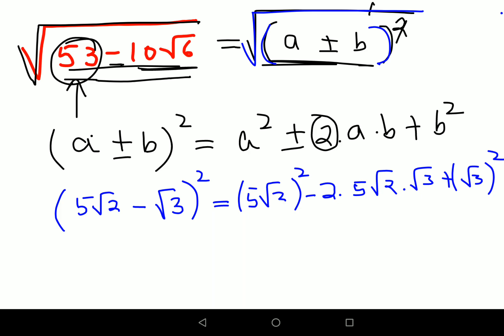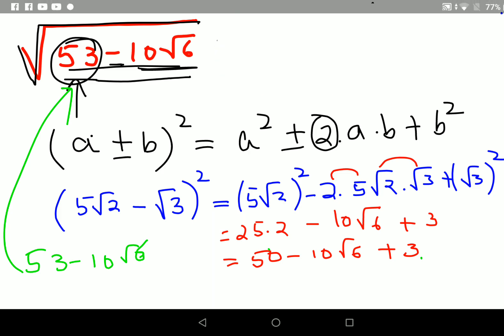This will become 5 root 2 the whole squared minus 2 into 5 into root 2 into root 3 plus root 3 the whole squared. So now this becomes 5 squared which is 25 times 2 minus 2 into 5 gets you 10 root 6, and then root 3 squared is 3. We have 25 into 2 that gets you 50 minus 10 root 6 plus 3.